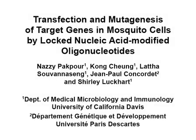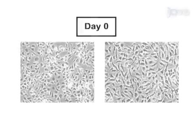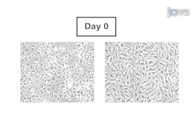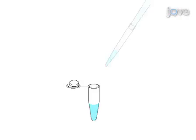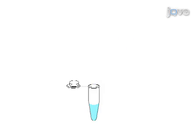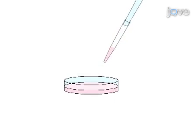The overall goal of this procedure is to demonstrate a novel strategy for site-directed mutagenesis in Anopheles mosquito cells. This is accomplished by first preparing healthy cultured cells for transfection. The cells are then transfected with the appropriate control and test DNAs through the addition of transfection reagents.